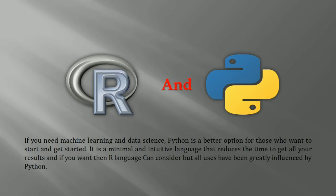If you compare the two programming languages, R and Python, both are used widely in the data science and machine learning industry. But Python is a better option for those who are newcomers or new to coding, because it is a minimal and intuitive language that reduces the time to get results. The syntaxes are easier compared to other programming languages. You can consider R also, but Python provides a greater ease of understanding.